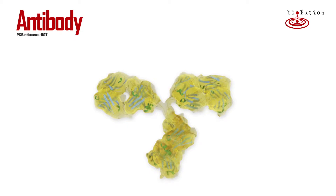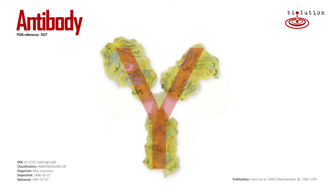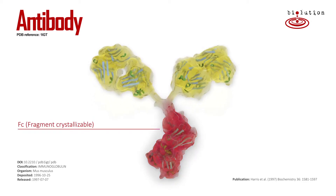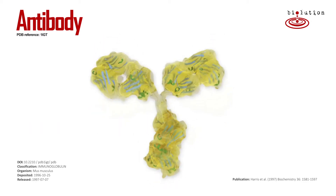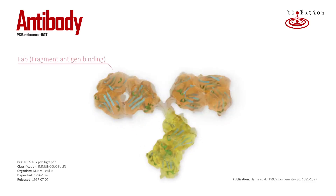We have depicted here the main isotype, an IgG, which has a characteristic Y-shape. The stem, or FC, is connected by a flexible region to two arms sticking out at both sides, referred to as FAB.